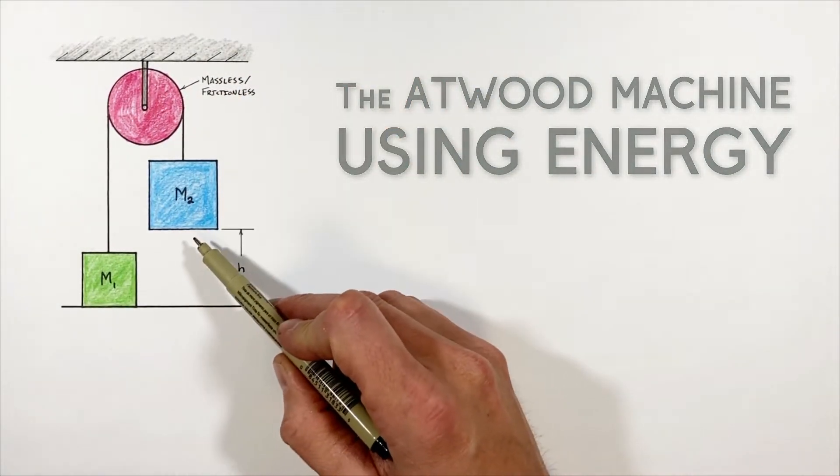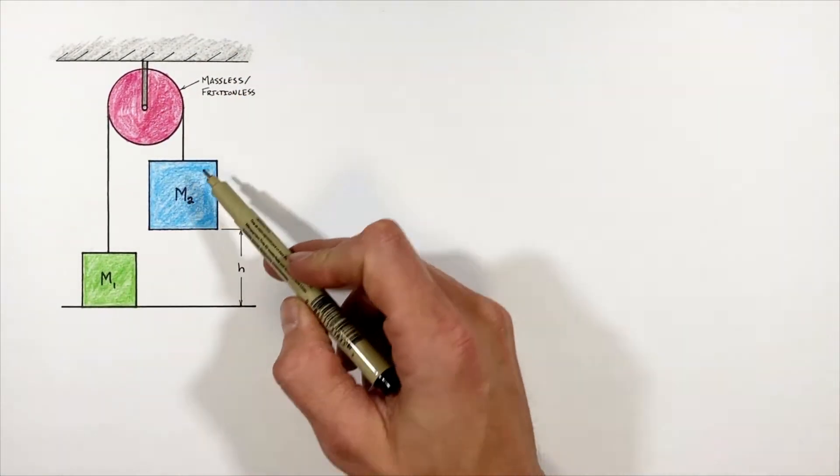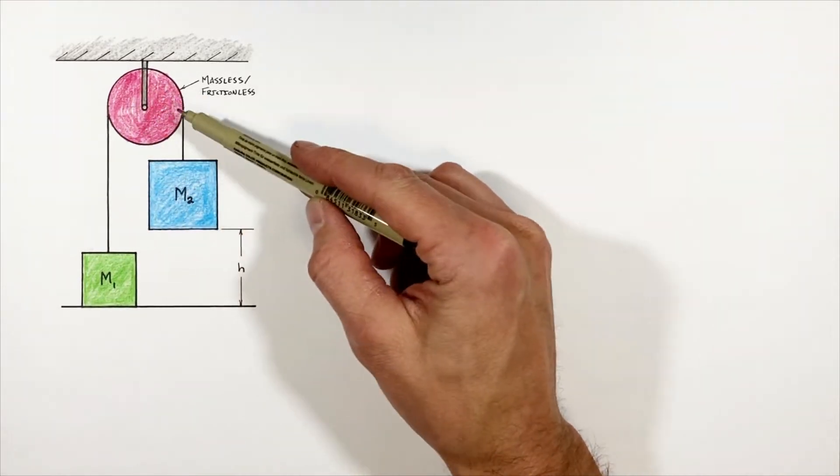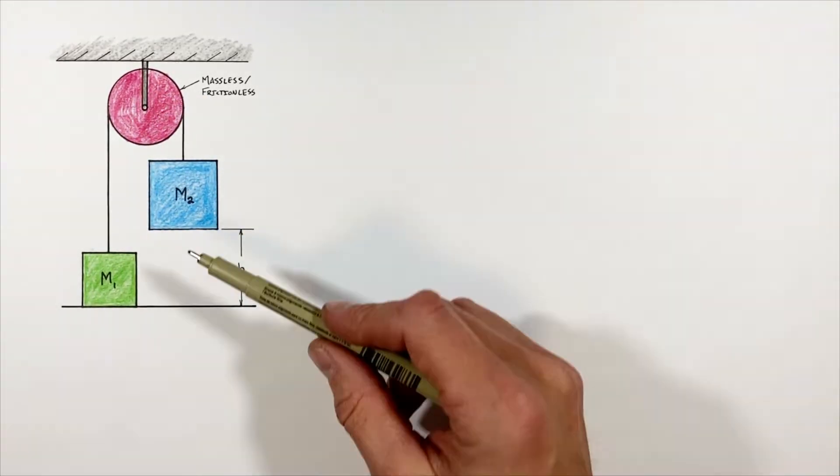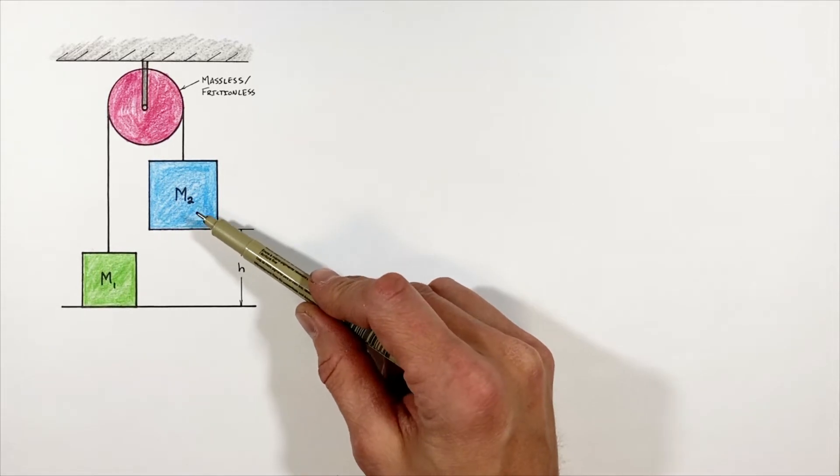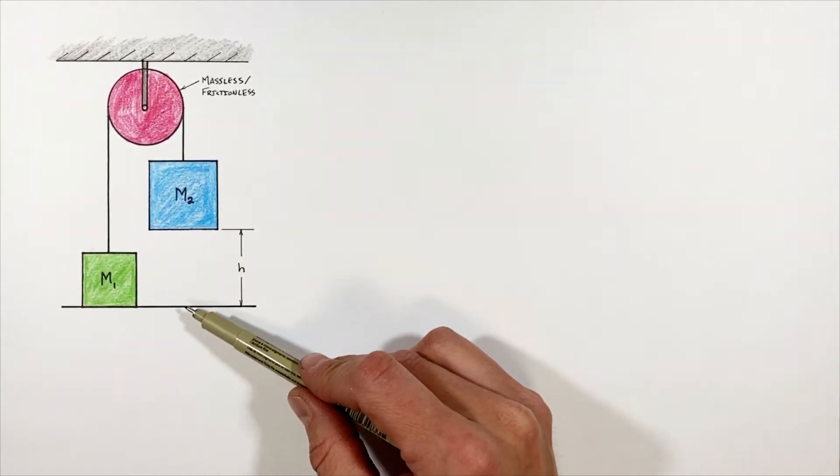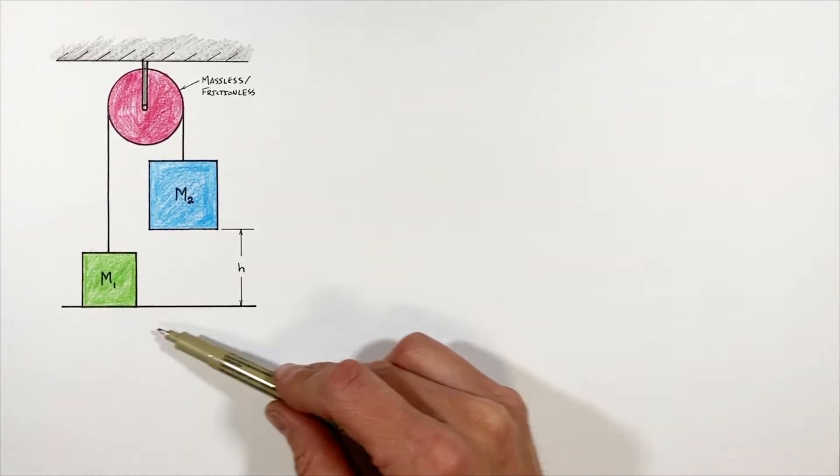All right, today I want to take a look at the hanging Atwood machine, which consists of two blocks hanging from a string which is run up over a massless and frictionless pulley. And in this problem we're going to derive expressions for both the acceleration of these blocks as well as the final velocity of this block when it hits the ground down here.